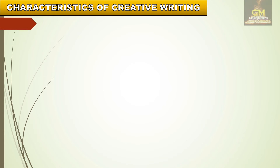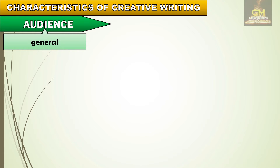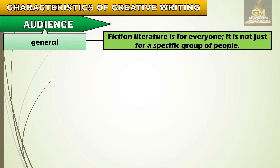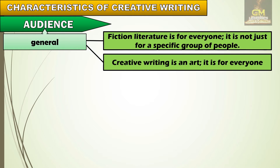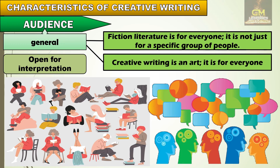The next characteristic of creative writing is having a general audience, meaning it is for everyone — not just for a specific group of people. Creative writing is an art, therefore it is for everyone. Since it is for everyone, we should also expect that it is always open for interpretation, meaning how a person would interpret a particular literature would be dependent on how he or she would understand and appreciate it.